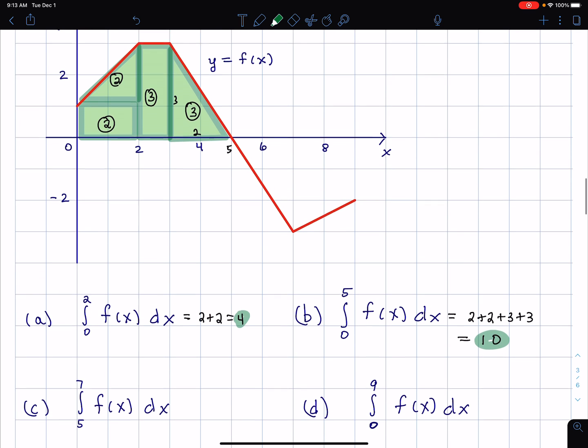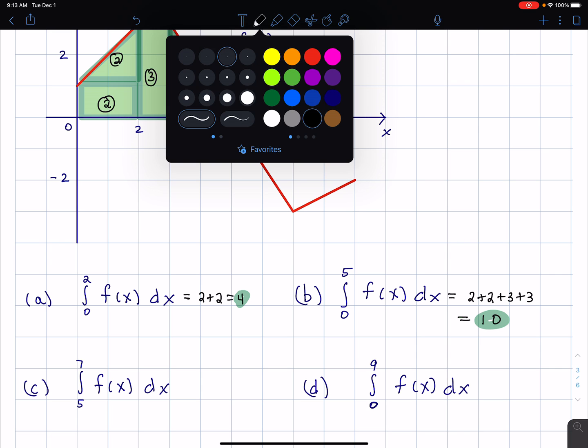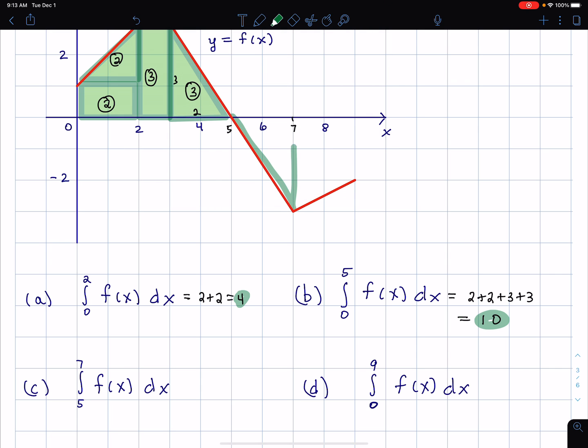Now if I go from 5 to 7, which is part C, what's notable is that the region between the curve and the x-axis lies below the x-axis. Let's first find the area.